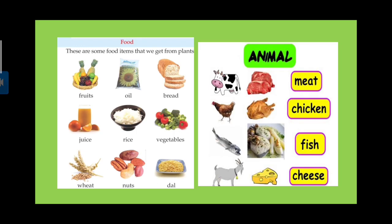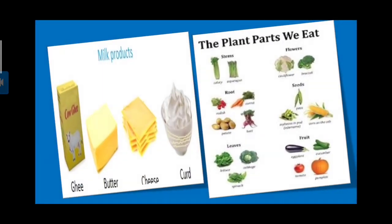Here are some pictures of food items that we get from plants and animals. Plants: fruits, oil, bread, juice, rice, vegetables, pulses, nuts, wheat. Different items we get from plants. And from animals: meat, chicken, fish, cheese and egg also. This all we get from animals.